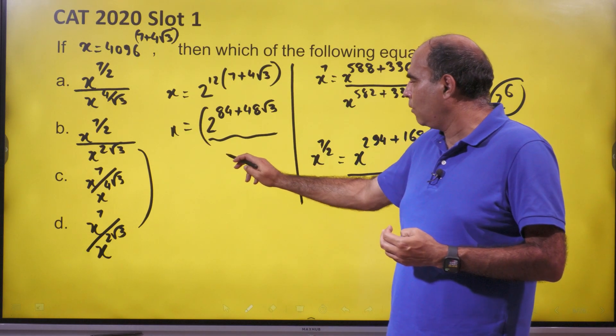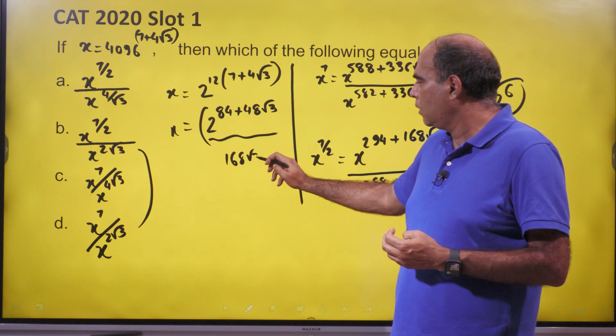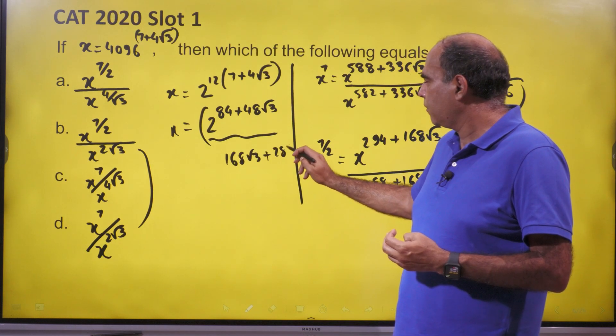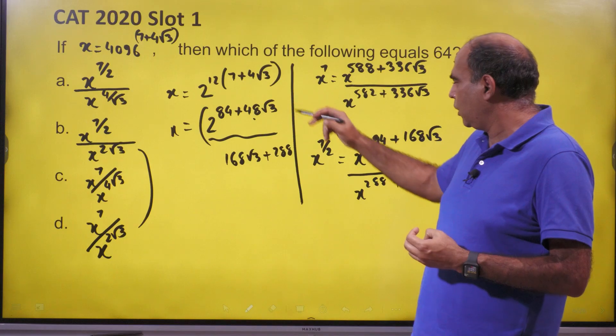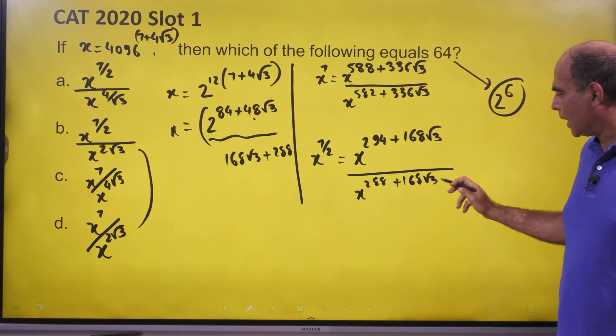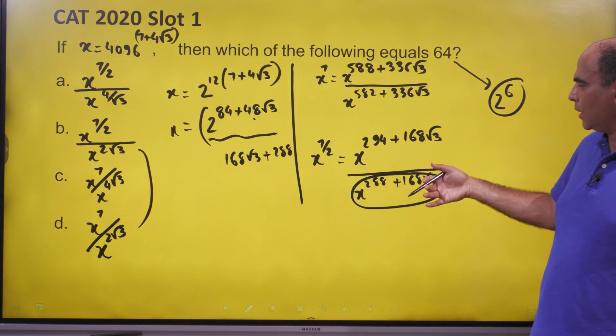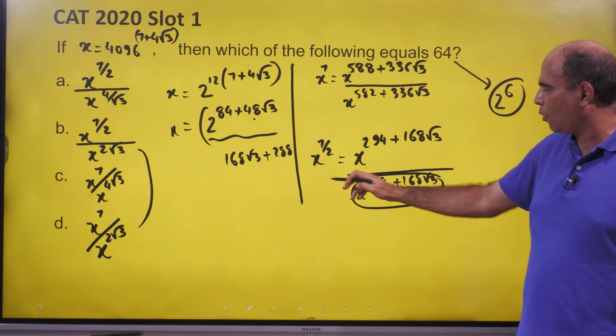When you look at x raised to 2 root 3, this is x, so x raised to 2 root 3 will be 168 root 3 plus 288. 48 into 2 into root 3 into root 3. And that's exactly what I want. If I put this in the denominator, x raised to 2 root 3 in the denominator.